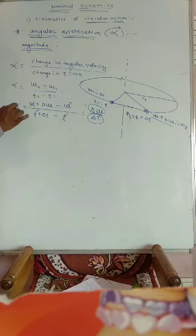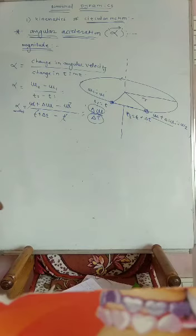This is the average angular acceleration. Next, we discuss instantaneous angular acceleration — the angular acceleration of a particle at a particular instant of time. The instantaneous angular acceleration is the limiting value of the average angular acceleration when the time interval approaches to zero.